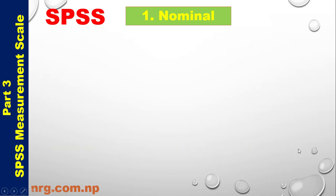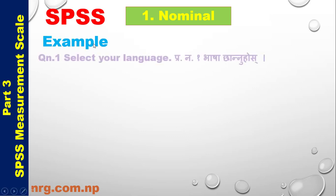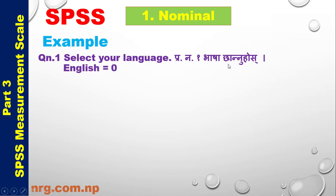Nominal Scale Example. Question Number 1: Select your language. For English: 0, for Nepali: 1.